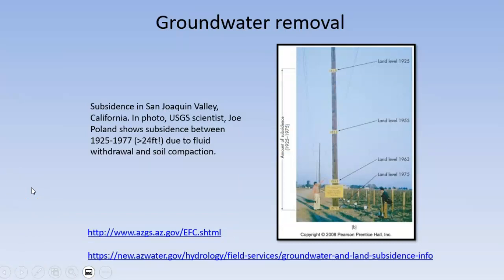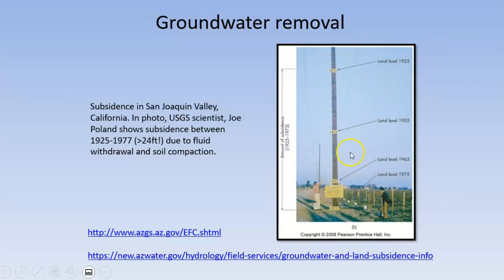Groundwater removal is probably one of the more dramatic forms of subsidence we can see. There are places in the San Joaquin Valley where so much water has been depleted that as you remove fluid from those open spaces, the sediment compacts down. There have been drops of up to 25 feet in certain areas — maybe six inches a year over 50 years. Most of this is farmland, so not a lot of structures are getting damaged, but people are becoming more aware of it and trying to control it.